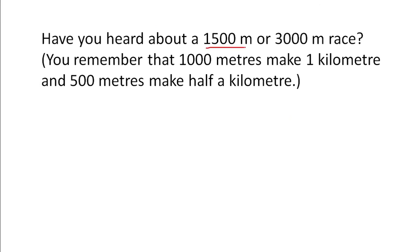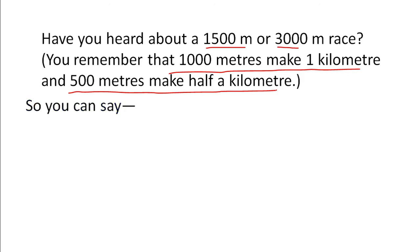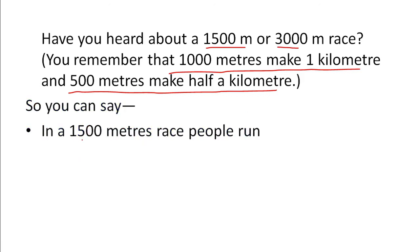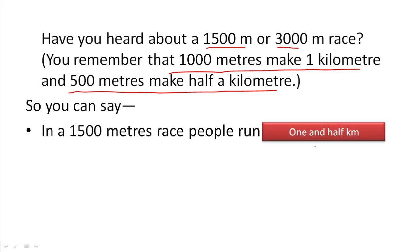Have you heard about 1500-meter or 3000-meter races? Remember: 1000 meters equals 1 kilometer, and 500 meters makes half a kilometer. So a 1500-meter race means people run 1 and a half kilometers. 500 meters is half a kilometer, so 1500 meters is 1.5 kilometers.